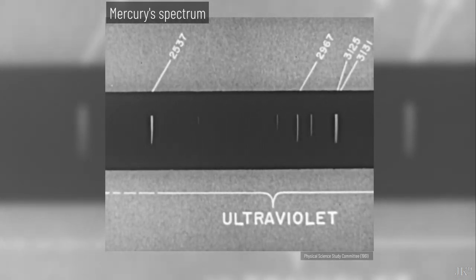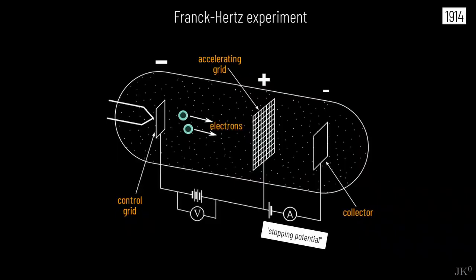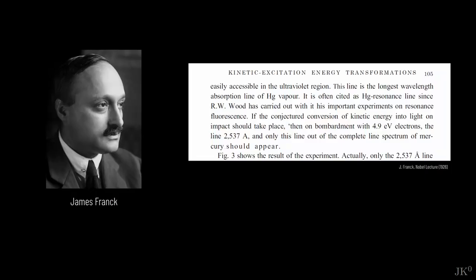Remember that they still didn't know about Bohr's atomic model. Since their experiment clearly showed that, contrary to what we calculated earlier, energy is being transferred from the electrons to the mercury atoms via inelastic collisions, Franck and Hertz carried out a follow-up experiment. The setup was identical, but they added a spectrograph so they could observe the spectral lines of the mercury gas. In the words of James Franck, if the conjecture conversion of kinetic energy into light on impact should take place, then on bombardment with 4.9 eV electrons, the line 2537 angstrom and only this line out of the complete spectrum of mercury should appear.